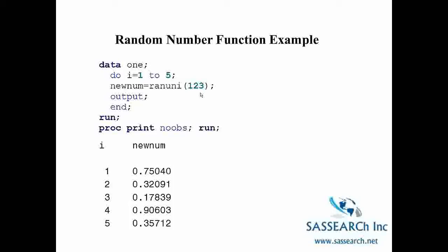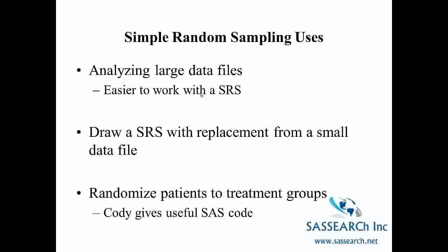The random number function can be used in programs to generate random samples from your data. And we are going to look at how we can use the random number function to generate random samples in the SAS demonstration video. There will be occasions when you want to make use of simple random sampling in your research. First of all if you are analyzing a very large data file it's easier to work with a simple random sample than with the large data file. It doesn't take up as much computation time. You can test out programs on a smaller sample and then once those programs work you can apply them to your larger data files.